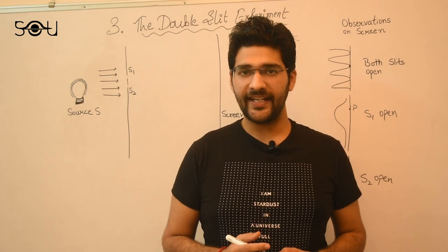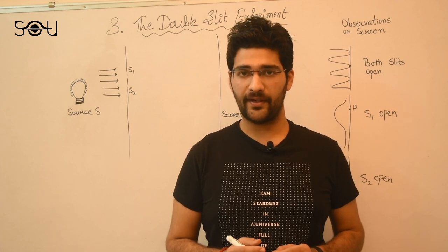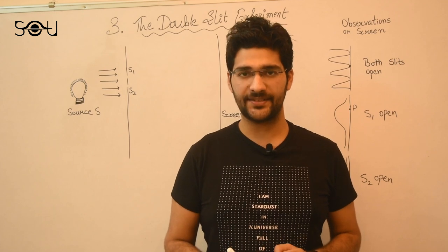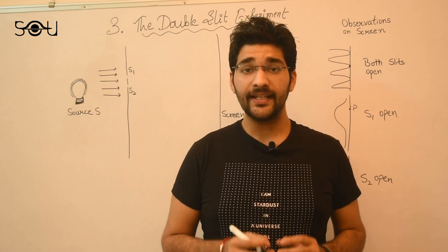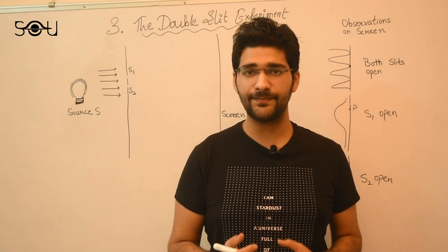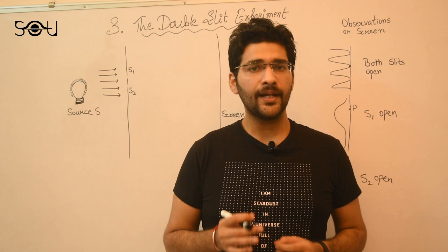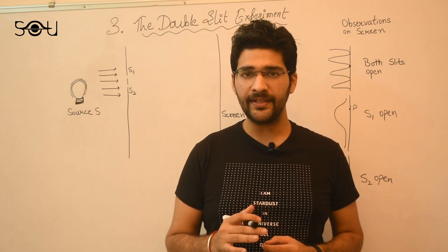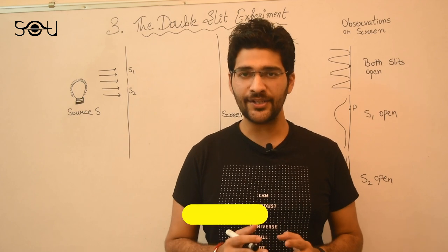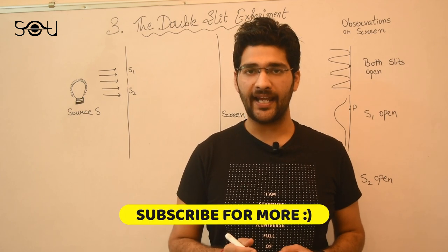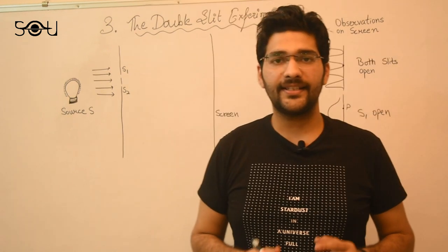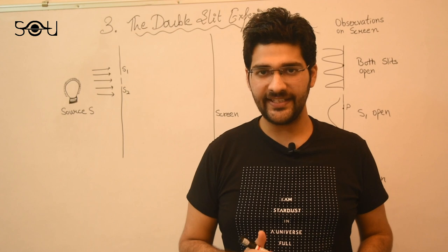However, in the year 1801, one of the most important experiments in the history of mankind was performed: Young's double slit experiment by Thomas Young. This experiment gave a fatal blow to Isaac Newton's theory of light that light is made up of particles. Before we see what this experiment tells us about the nature of light and quantum mechanics, make sure you subscribe to our channel and press the bell icon so that you don't miss any future videos of this series.